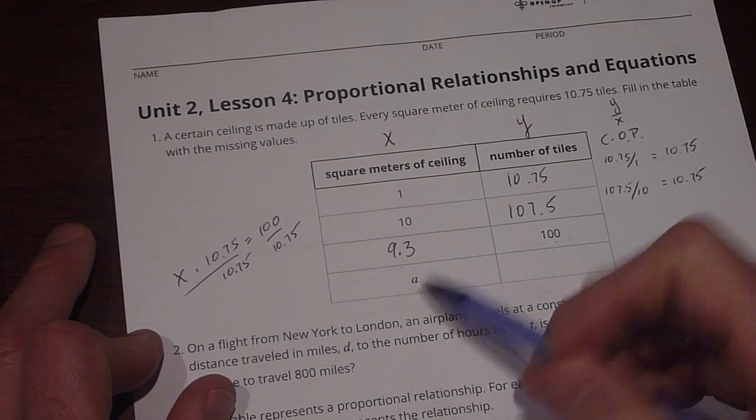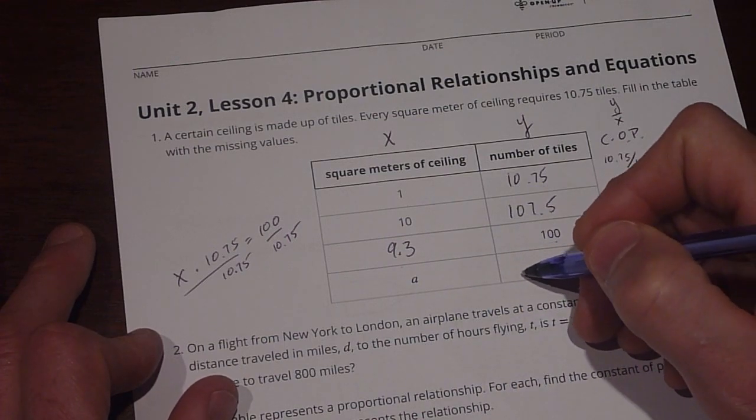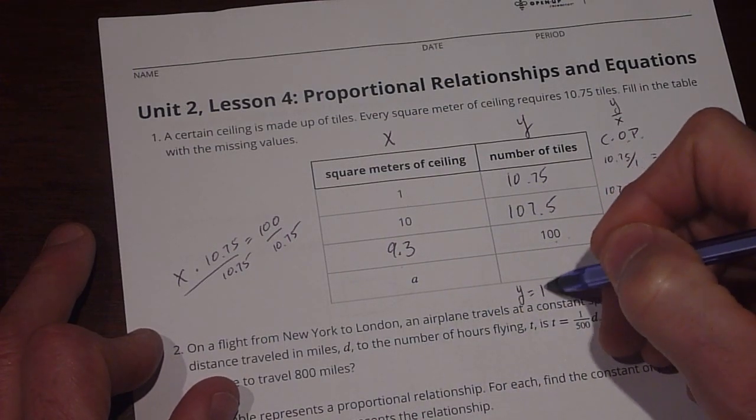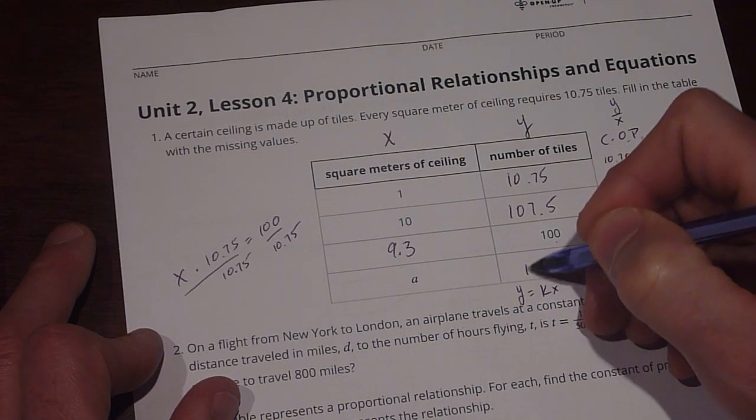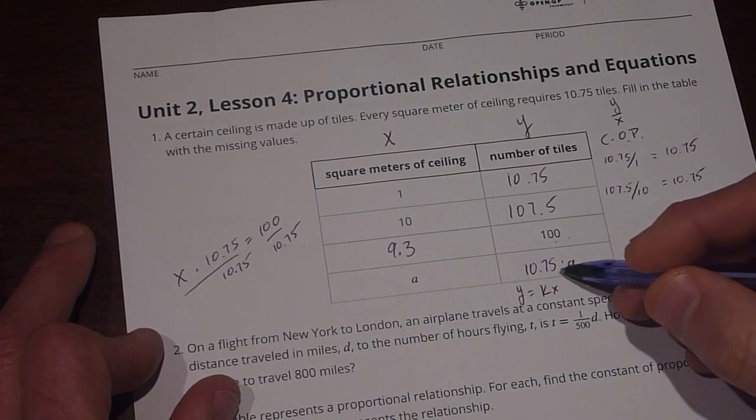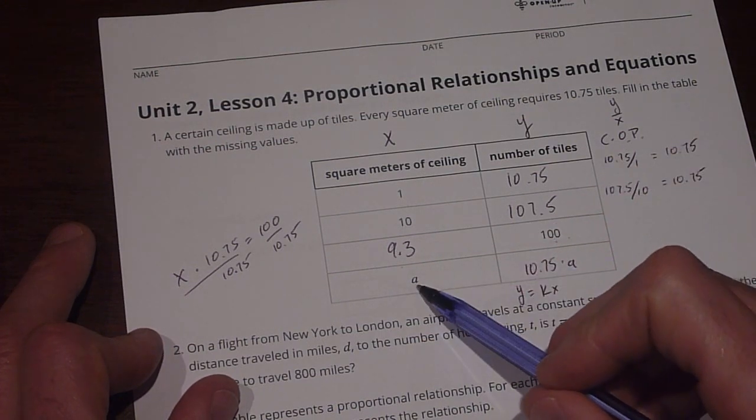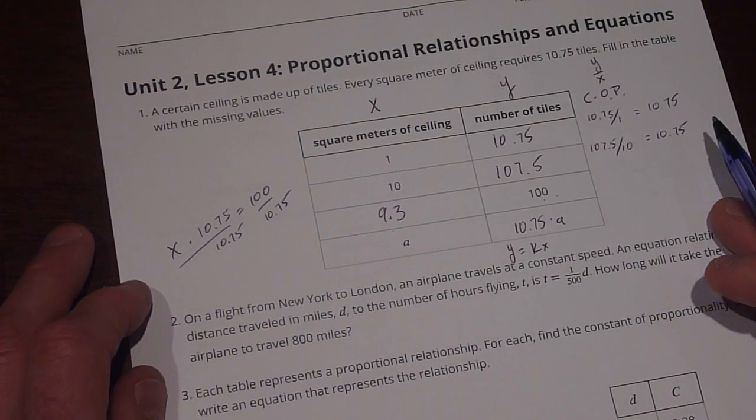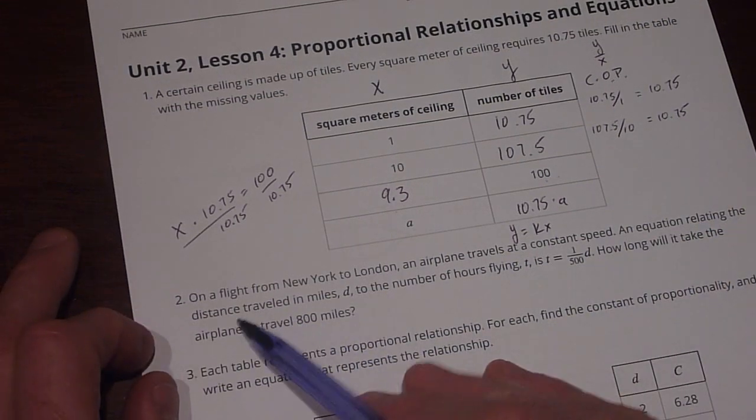And then for our rule for A, that's going to be similar to Y equals K times X, which is 10.75 times A. And that's how we're going to figure out how many square meters of ceiling we can get for our rule.